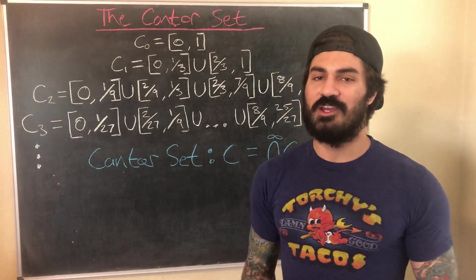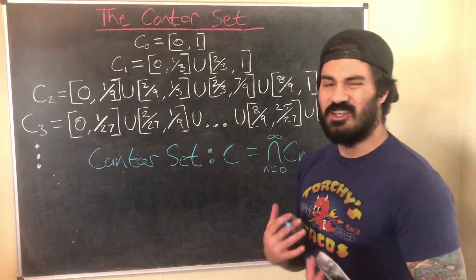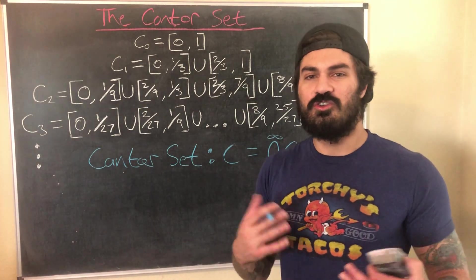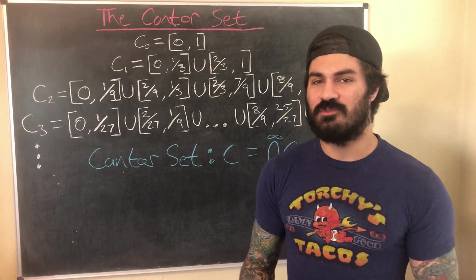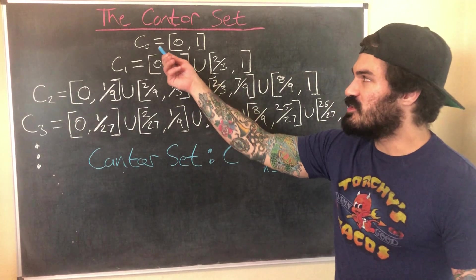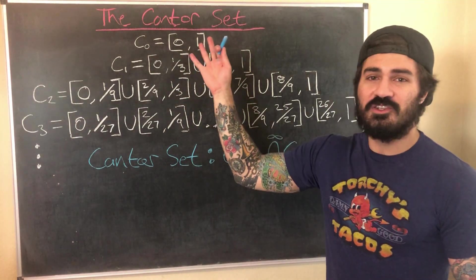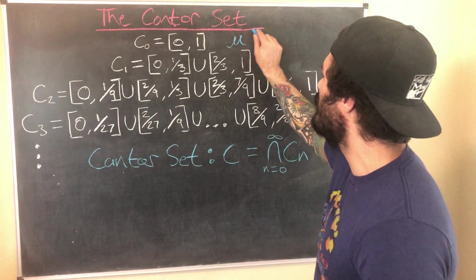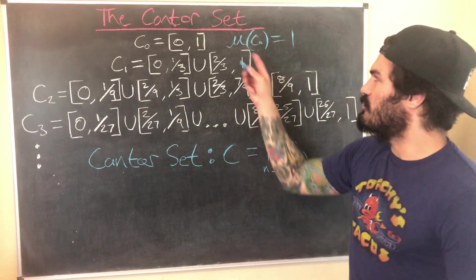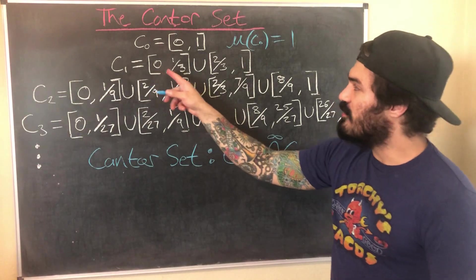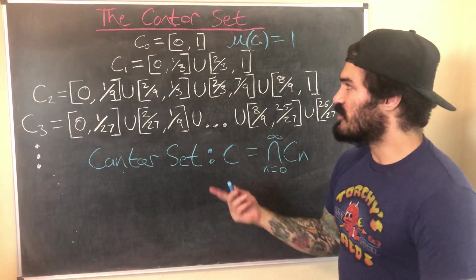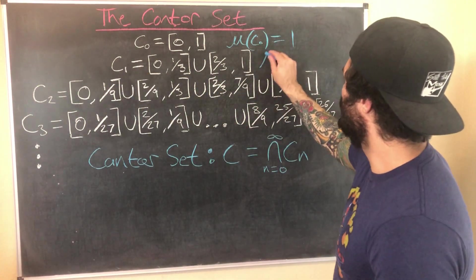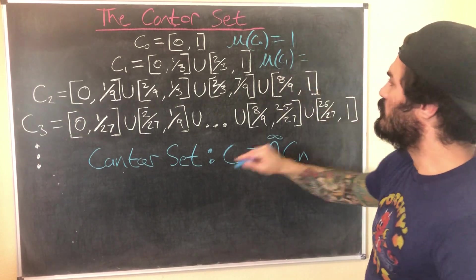Now let's talk about the measure of this set. If you've never studied measure theory, essentially the measure of a set is a way of assigning a notion of size to it. For an interval, the measure is simply its length — so the measure of C0 (the interval from 0 to 1) is 1. For C1, which is the union of two disjoint intervals each of length 1/3, the measure is 2/3.